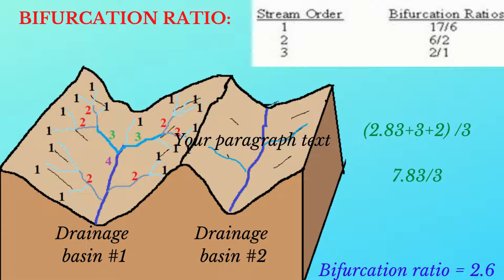So what is significant about bifurcation ratio, or how is it applicable in real life? The greater the ratio, the greater is the risk of flooding. This is because a larger ratio suggests that more water is flowing in from the tributary streams into the main river.